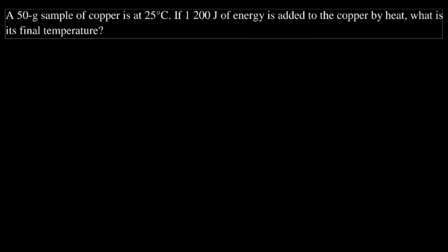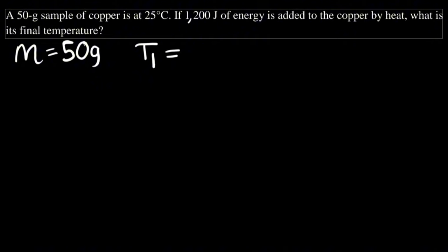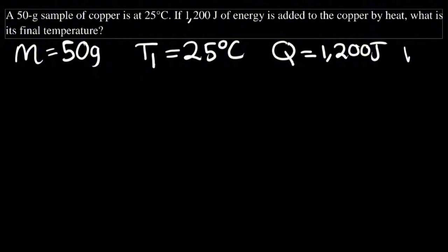Welcome. Today we are going to solve some problems related to latent heat, specific heat, and more. Here is the first question: a 50 gram sample of copper is at 25 degrees Celsius. If 1200 joules of energy is added to the copper by heat, what is its final temperature? We have the mass as 50 grams, the initial temperature t1 as 25 degrees Celsius, and energy as 1200 joules.